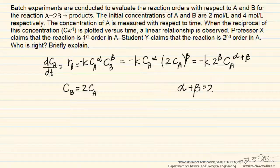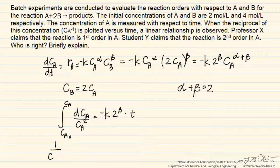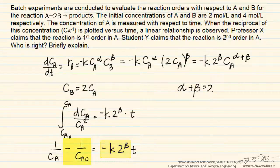If alpha plus beta is equal to 2, then we can separate the two sides of the differential equation. On one side we get dCA over CA squared, and on the other side we get negative k times 2 to the beta, times dt. Integrating from CA0 to CA gives us 1 over CA minus 1 over CA0. So if we plot the reciprocal of the concentration of A versus time, we get a straight line, where the slope is negative k times 2 to the beta, and the intercept is determined by the reciprocal initial concentration.